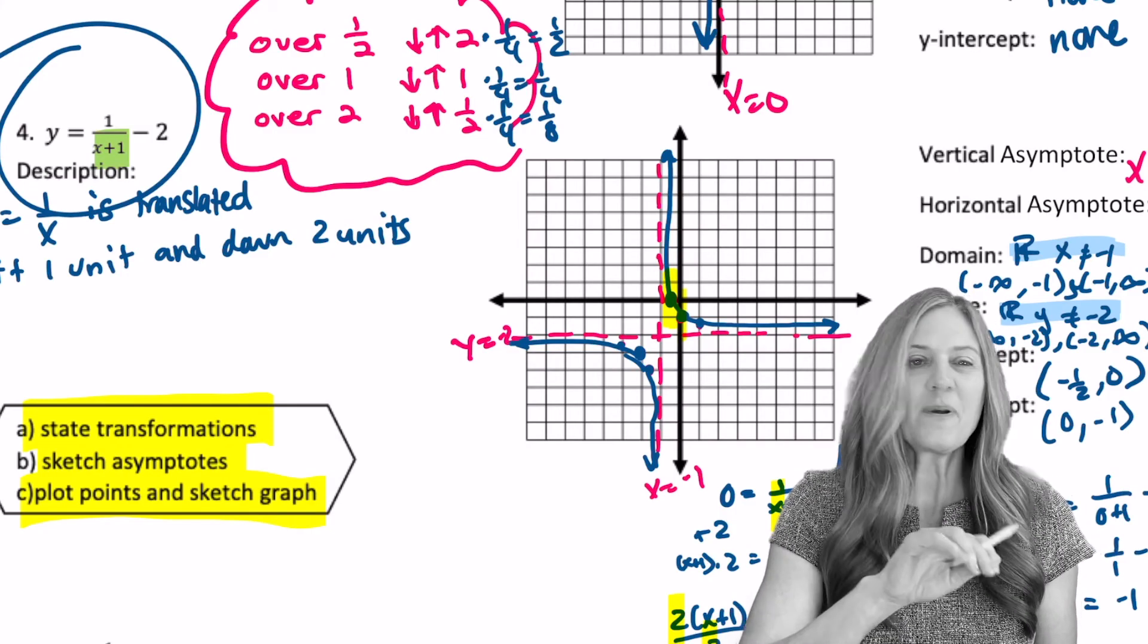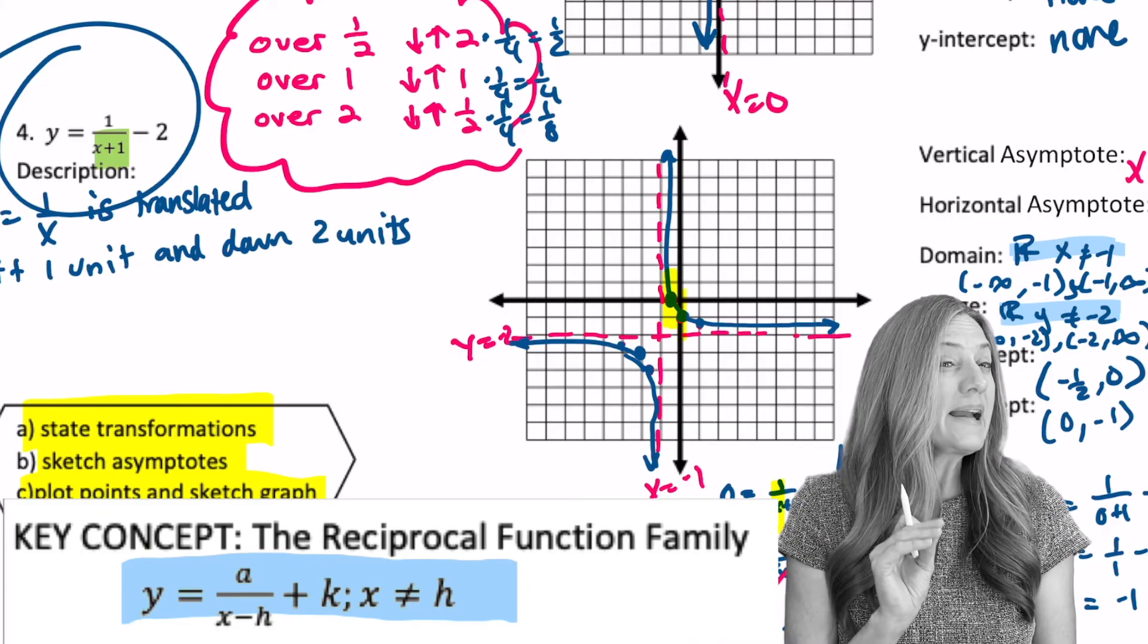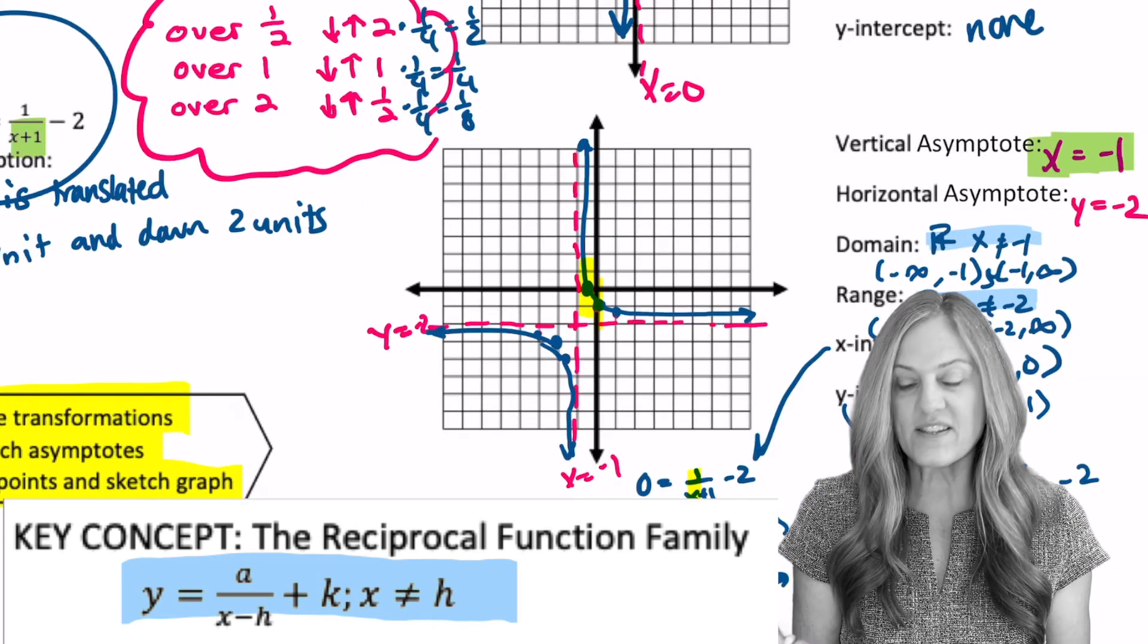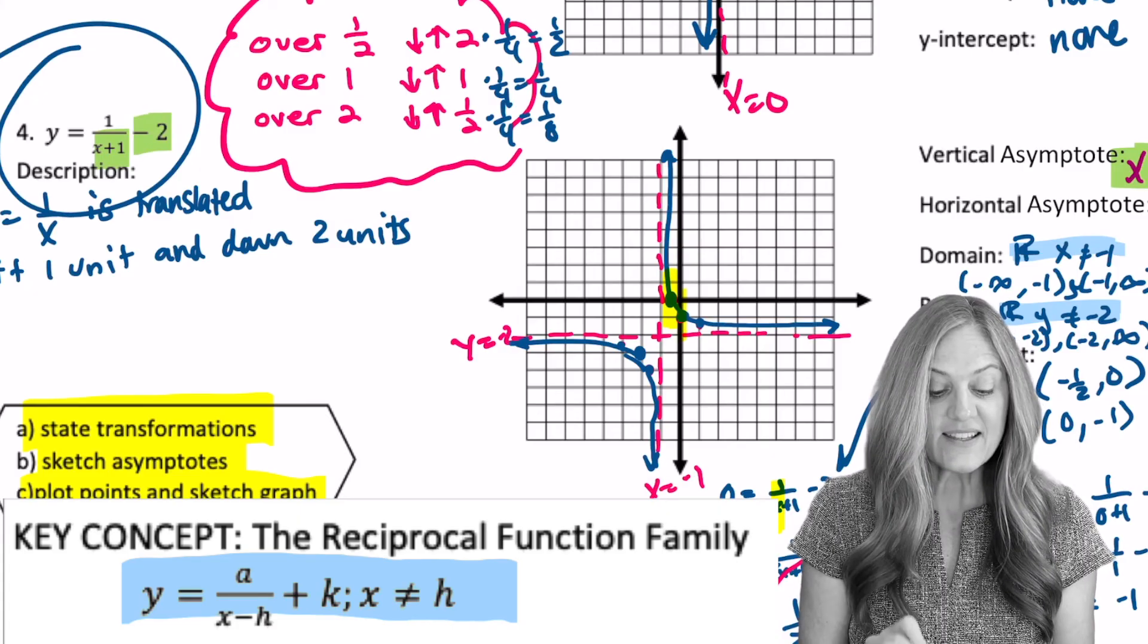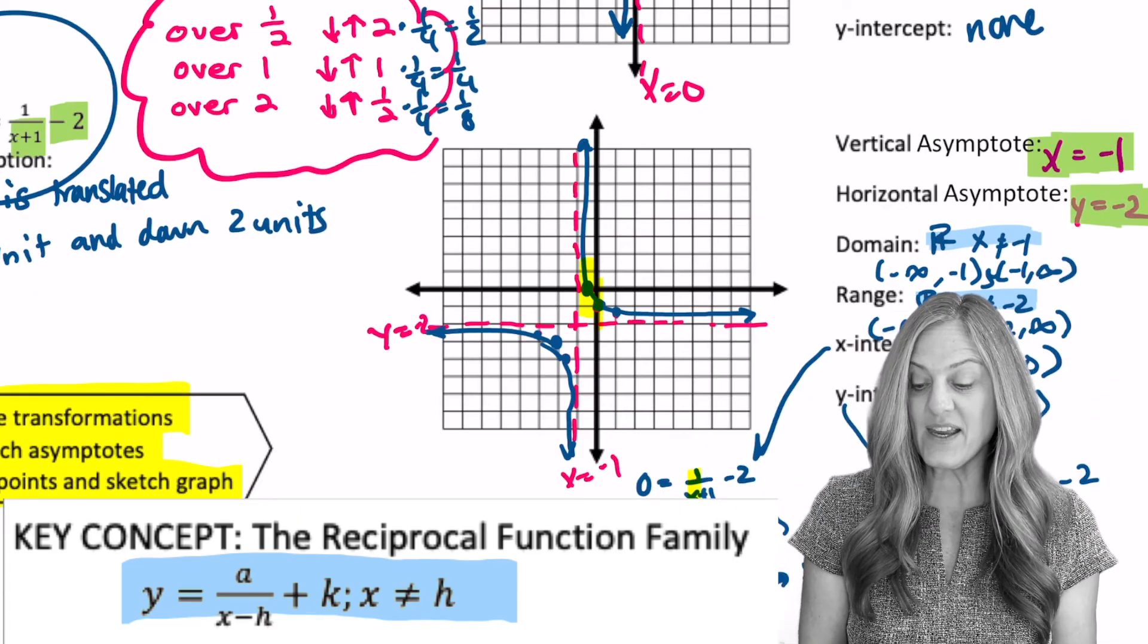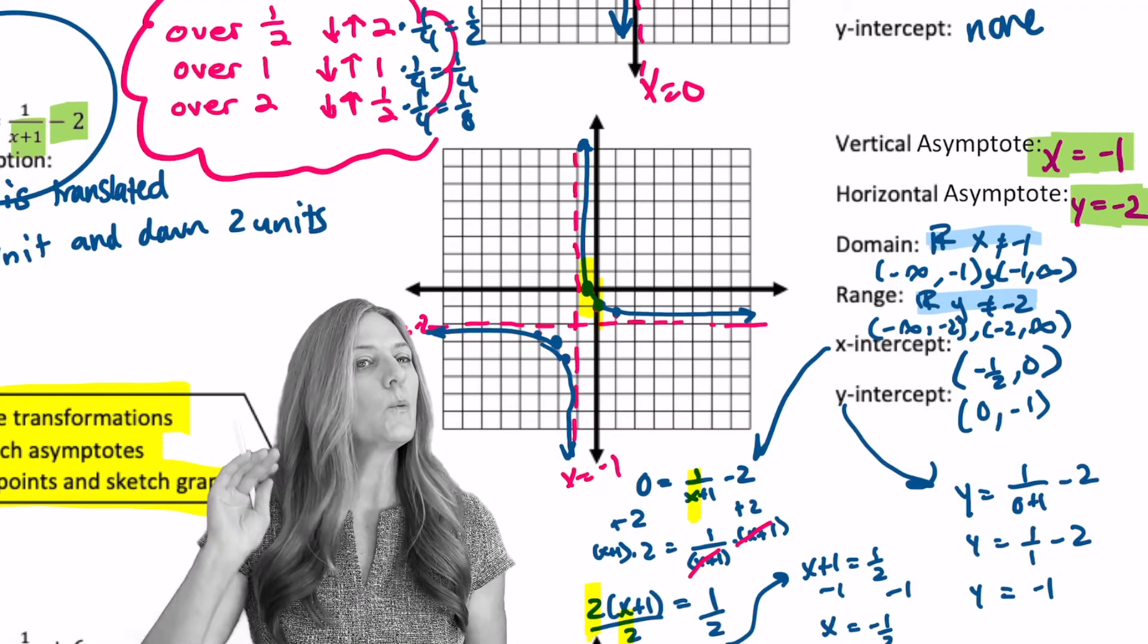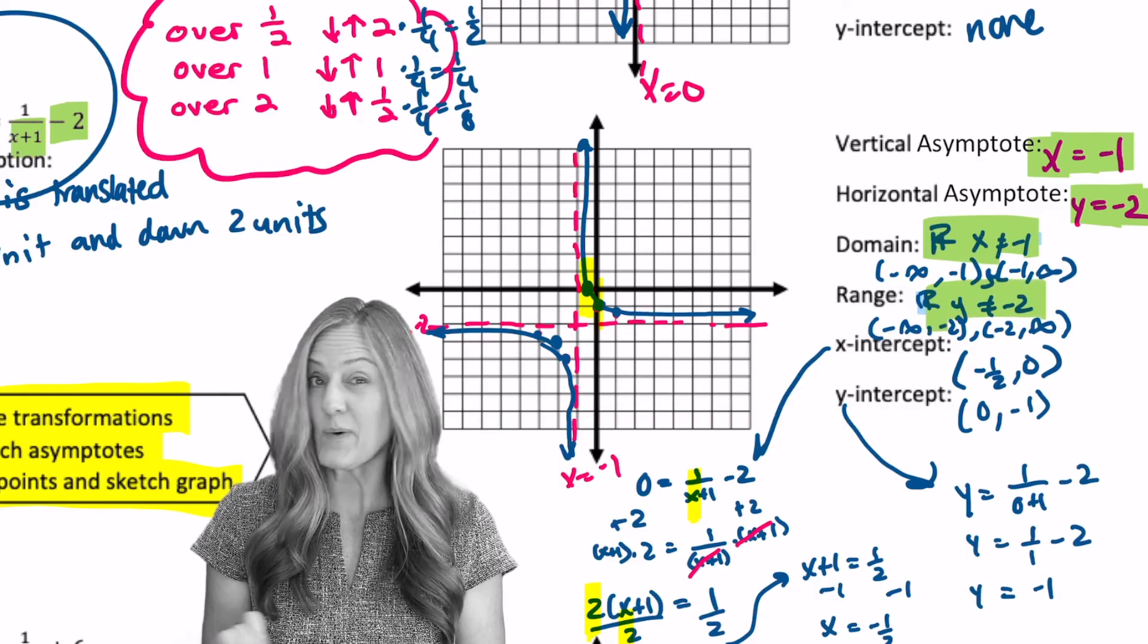Let's look back at example 4. We had x plus 1. Well, what's h? Remember, it's x minus h. So h was negative 1. And look, that was our vertical asymptote. Also, k is negative 2 plus negative 2. And that ended up being our horizontal asymptote. So as soon as we see the equation, we know our asymptotes. We also then know our domain and range. Let's practice.